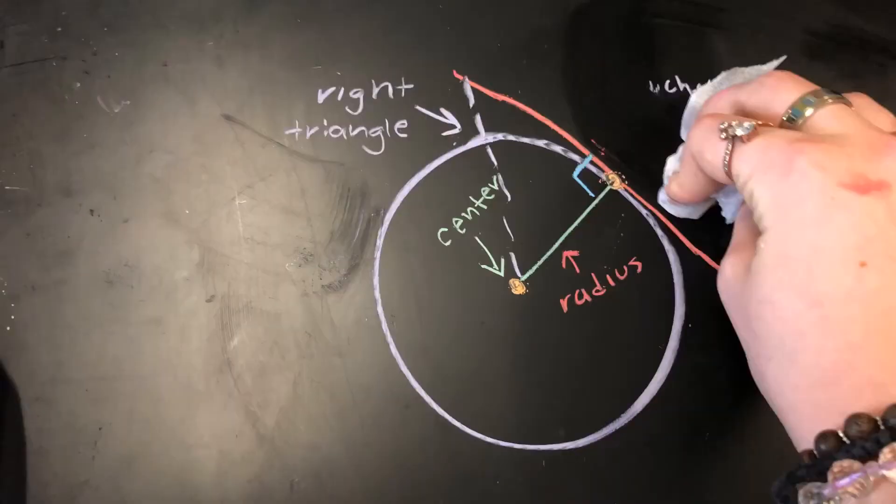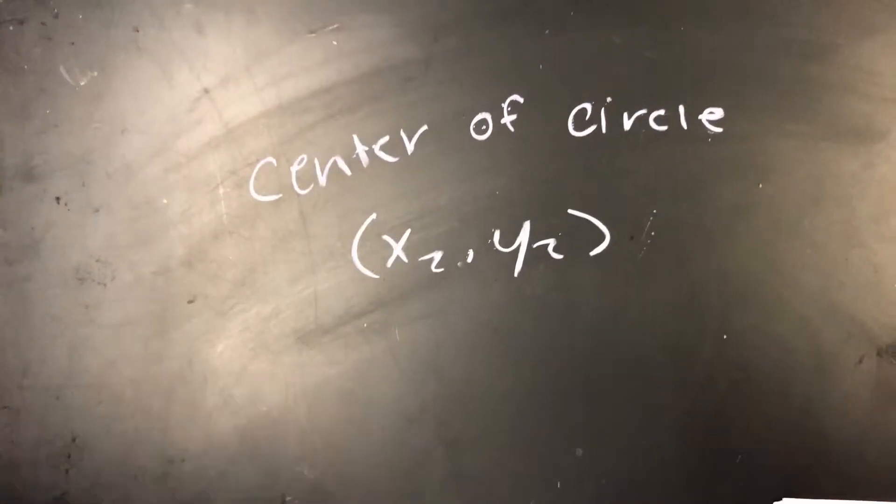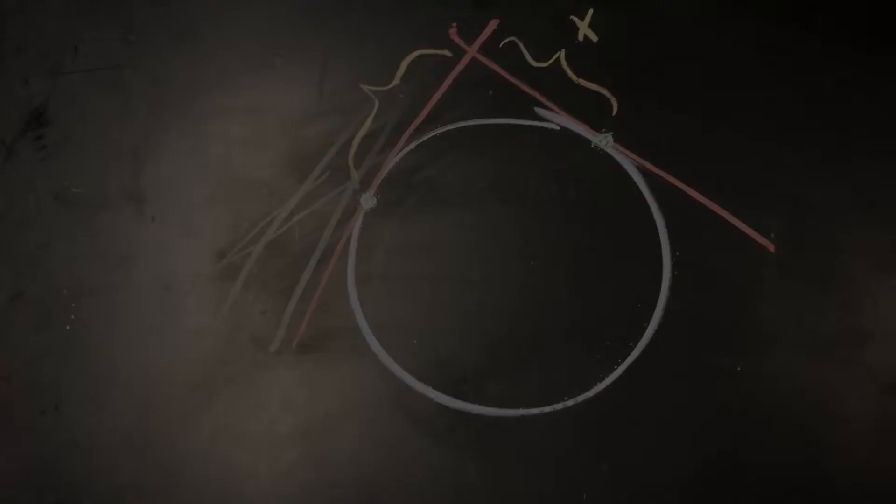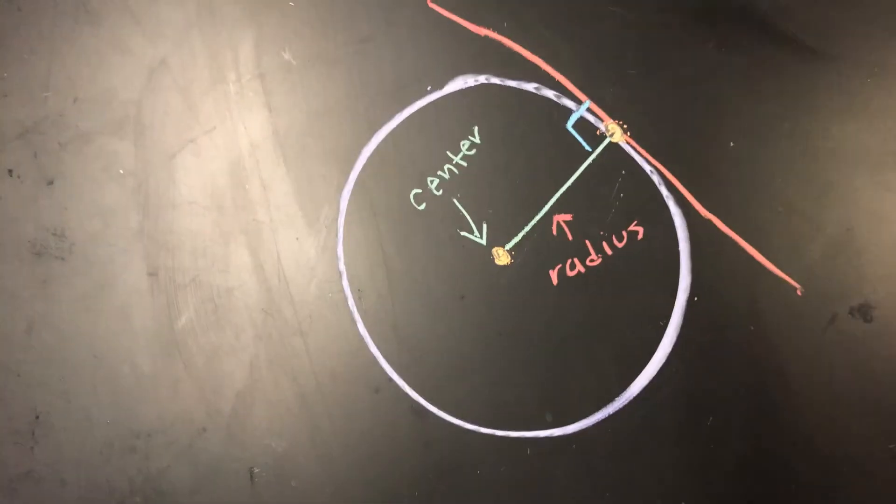When the slope of the tangent line and the point of tangency are known, the point slope formula can be used to write an equation for the tangent line.